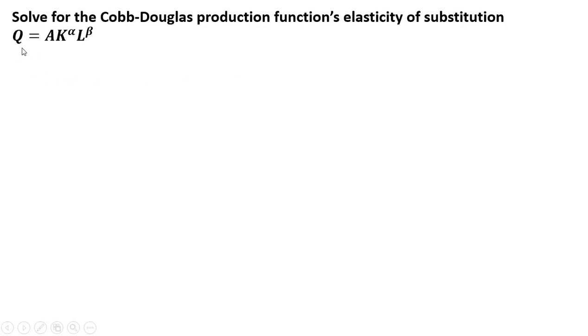Here is a general functional form for the Cobb-Douglas production function, Q equals A K to the alpha L to the beta, with K units of capital and L units of labor.